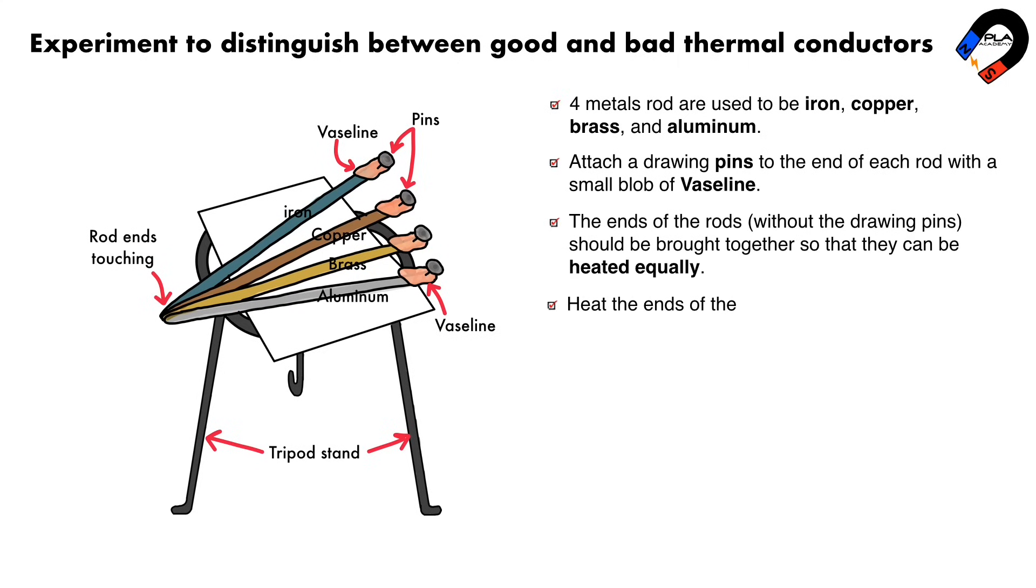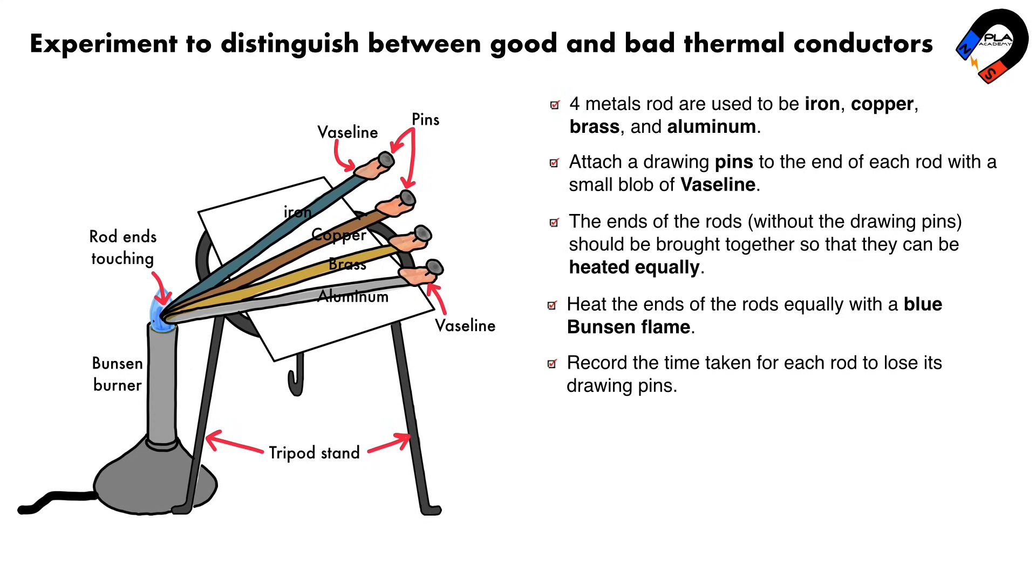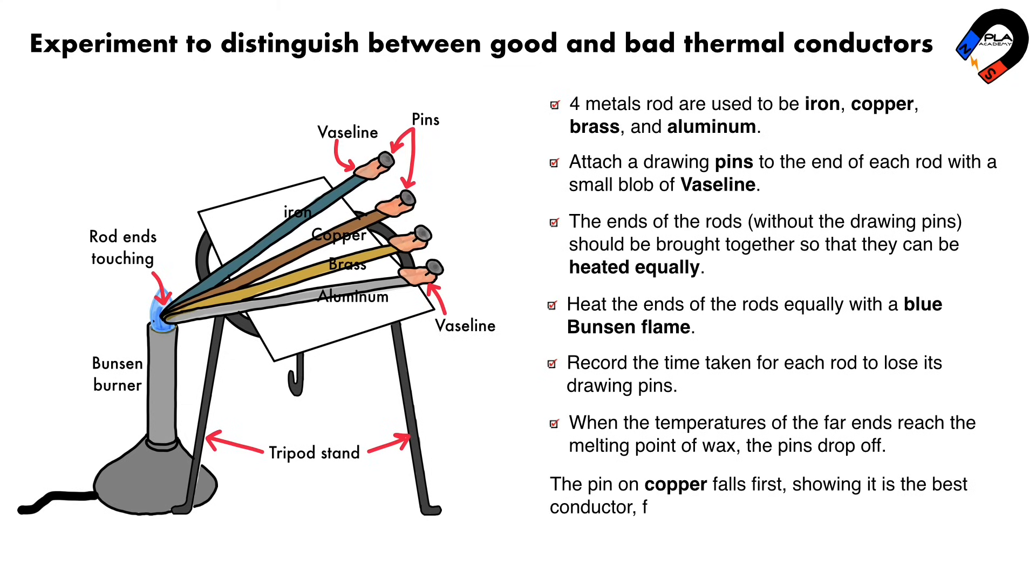Heat the ends of the rods equally with a blue Bunsen flame. Record the time taken for each rod to lose its drawing pin. When the temperatures of the far ends reach the melting point of wax, the pins drop off. The pin on copper falls first, showing it is the best conductor, followed by aluminum, brass, and then iron.